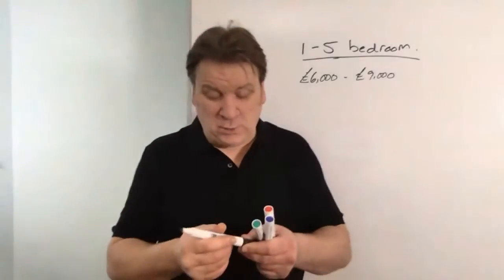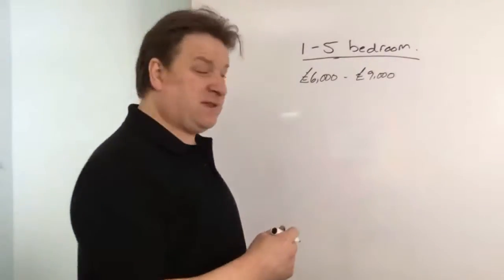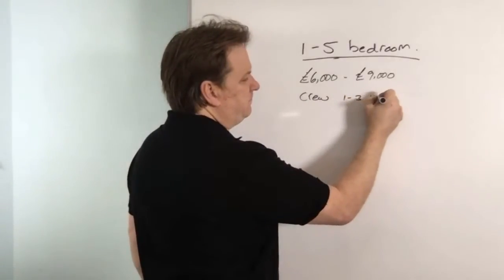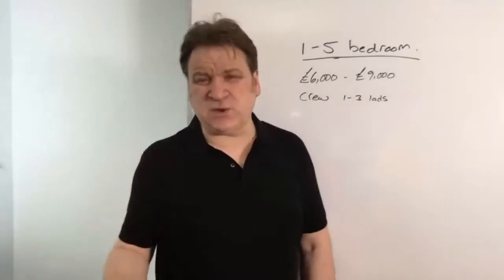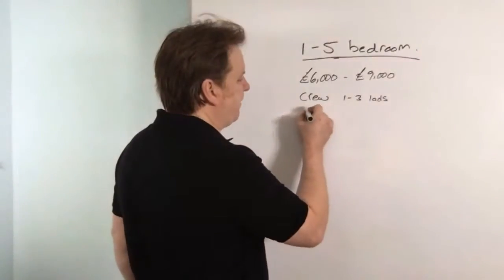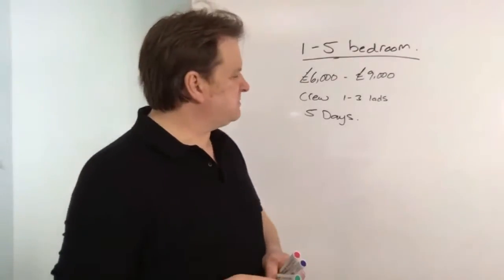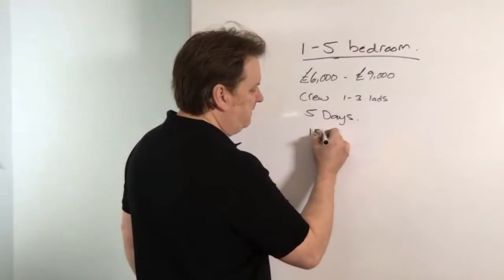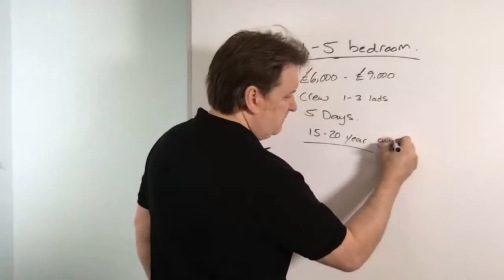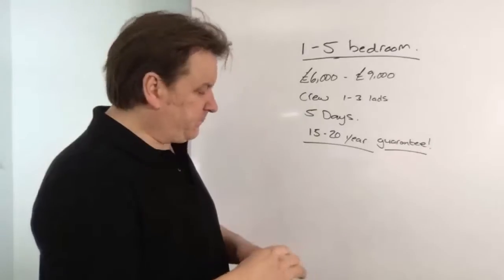Well, the people doing it have to make a living. That's what they do for a living, so that's why they charge the price they charge. They'll probably have a crew from one to three lads. Typical time to install a septic tank takes about five days. And you're also paying for a guarantee - you'll get anywhere from 15 to 20 year guarantee. So typically that is what it will cost you.